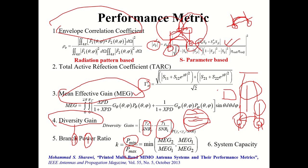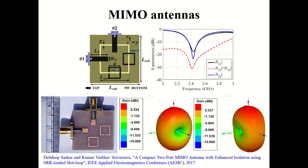The sixth parameter is System Capacity. We need to verify how much the capacity increases when implementing 2x2, 4x4, or 8x8 MIMO. Some software tools are available to perform this measurement and verification.